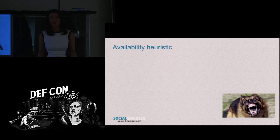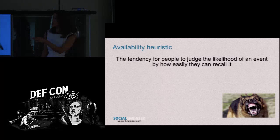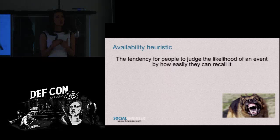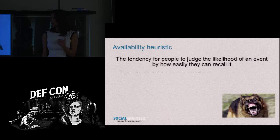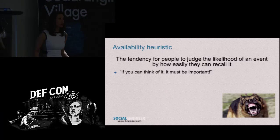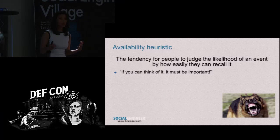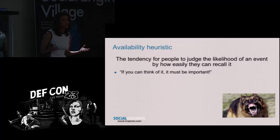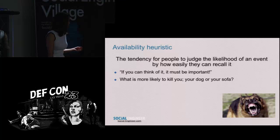Availability heuristic is our decision-making based on how easily we can recall something happening. The bottom line is: if you can think about it, it must be important. If we can recall something quickly, it might have been life or death — something really important. So the question is: what is more likely to kill you, your dog or your sofa?